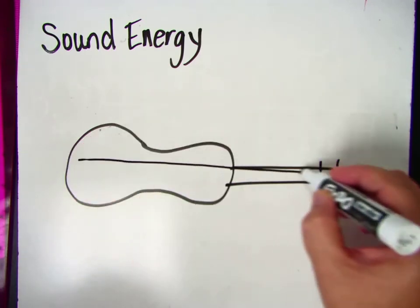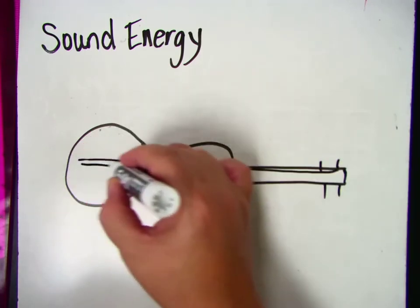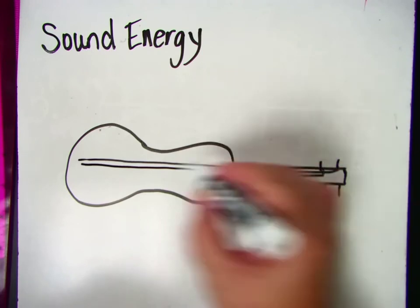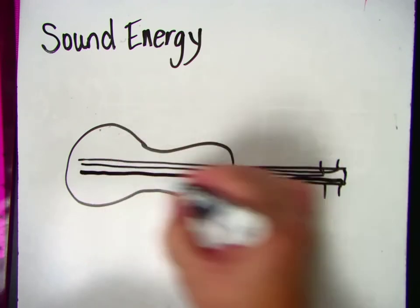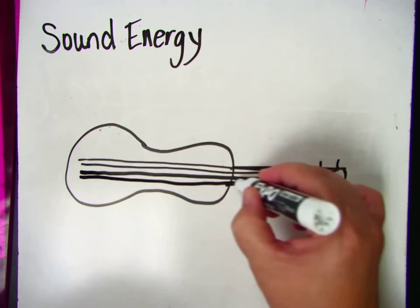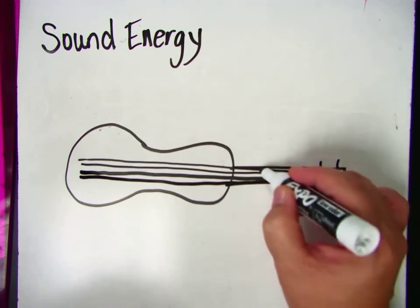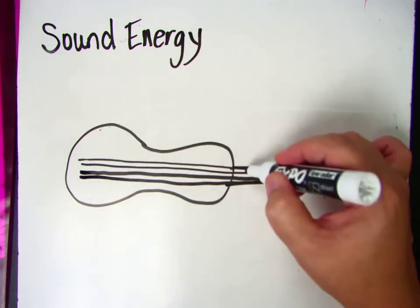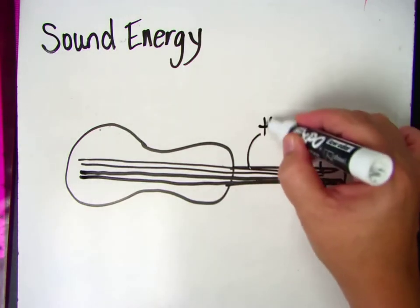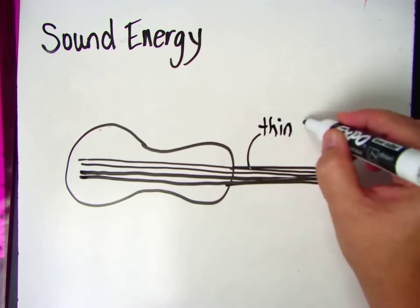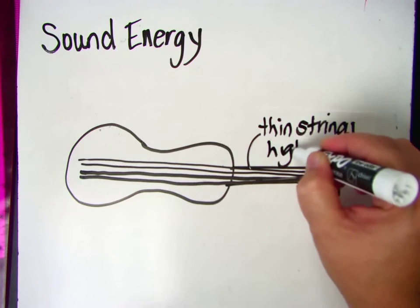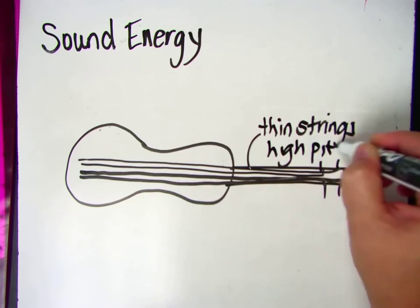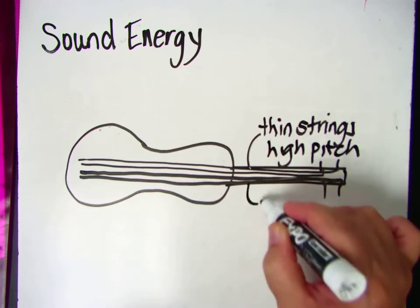There's thin, really, really thin, skinny strings on one end, and then there's really thick, thick strings on the other. If you've ever strummed a guitar, you've heard the difference between the thin strings and the thick strings. Thin strings have a high pitch, and the thick strings have a low pitch.